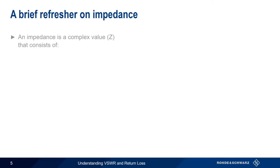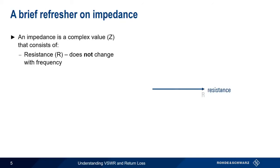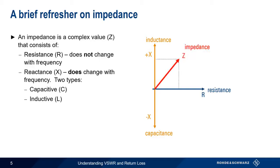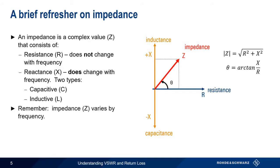Remember that an impedance Z is a complex value that consists of two parts: a resistance R, which does not change with frequency, and a reactance X, which does change with frequency. Reactance can be further divided into capacitive and inductive reactance, usually created by capacitors and inductors. Our complex impedance has both a magnitude and a direction, and because of reactance, total impedance varies by frequency.